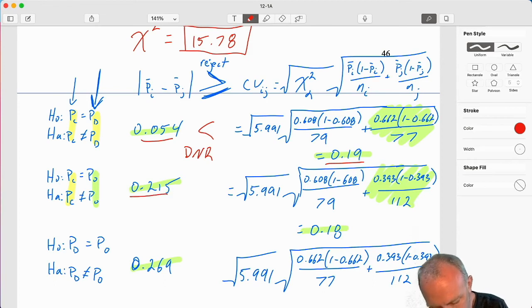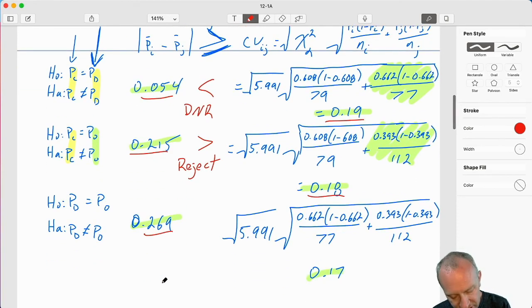The next one, 0.215, is larger than 0.18. We can reject here. And finally, the last one, 0.269, is larger than 0.17. I can reject here.